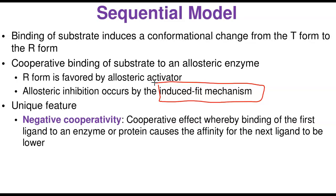Negative cooperativity means that the binding of the first ligand to an enzyme lowers the ability of the next ligand to bind. This is the kind of effect described by the sequential model: the binding of the first ligand causes the ability of the next to decrease. This is different from positive cooperativity where binding enhances subsequent binding.